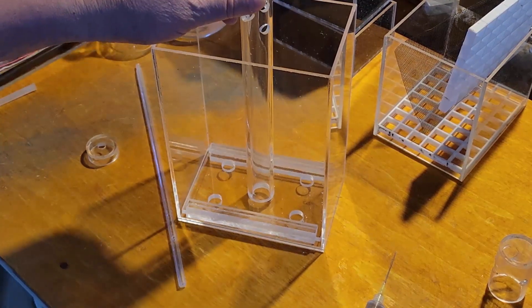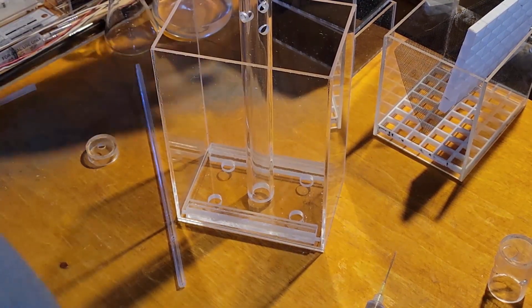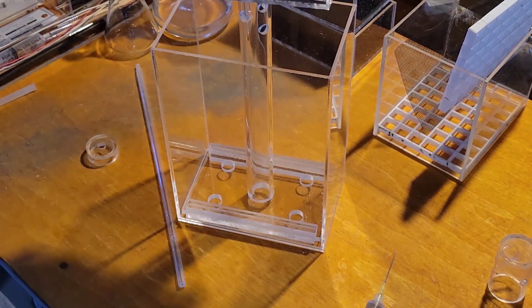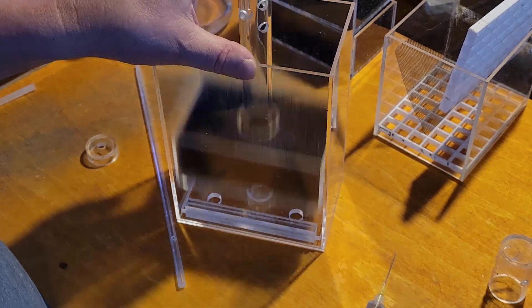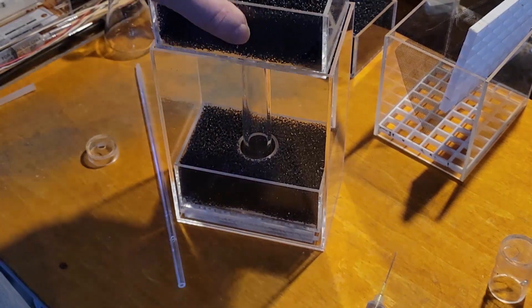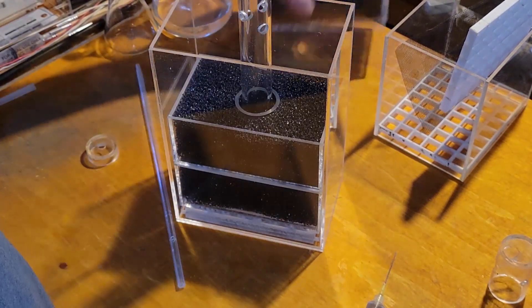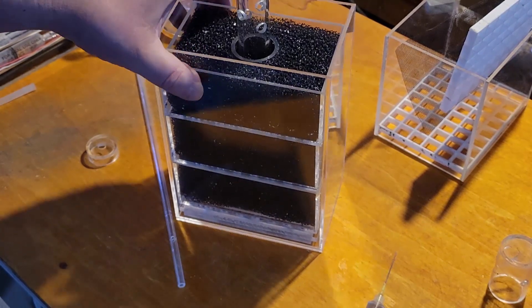So all this is going to do is it's going to sit in here like this, and then I'm just going to drop these in on top. That's pretty much the whole filtration system right there. Then I'm just going to put on that cap and put in the air tubing and this build is done.